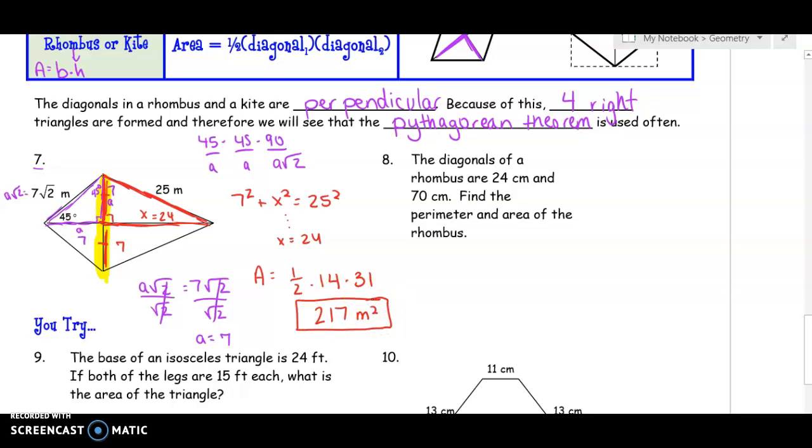So that's how that one works. Number 8, they give you the diagonals of a rhombus are 24 and 70. Find the perimeter and area. Let's deal with the area. The area of a rhombus, given the diagonals, we're going to use 1 half times diagonal 1 times diagonal 2. The diagonals are 24 and 70. So we're just going to do 1 half times 24 times 70, and that'll give us 840 square centimeters. So that's the area of this thing.